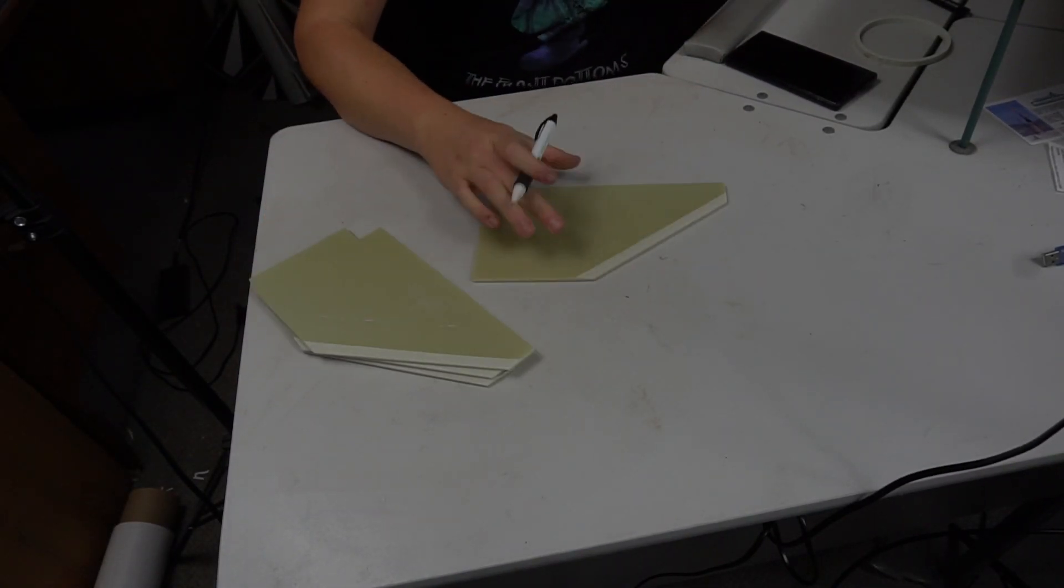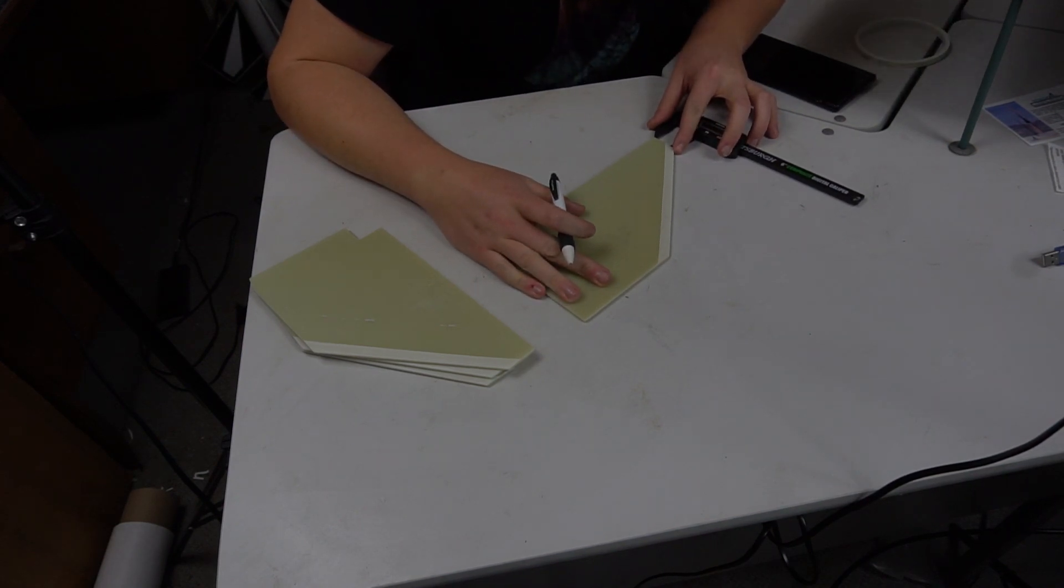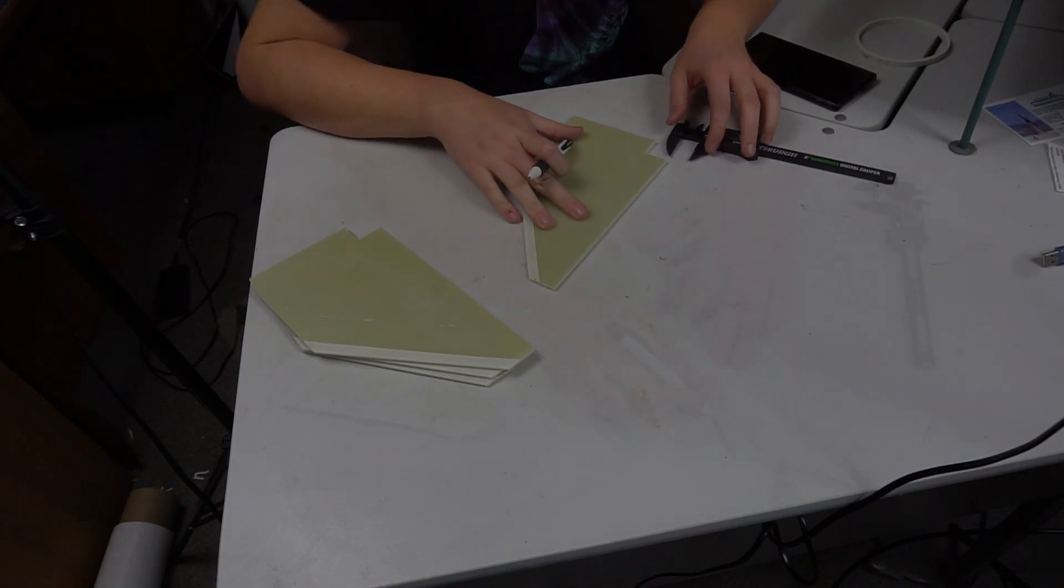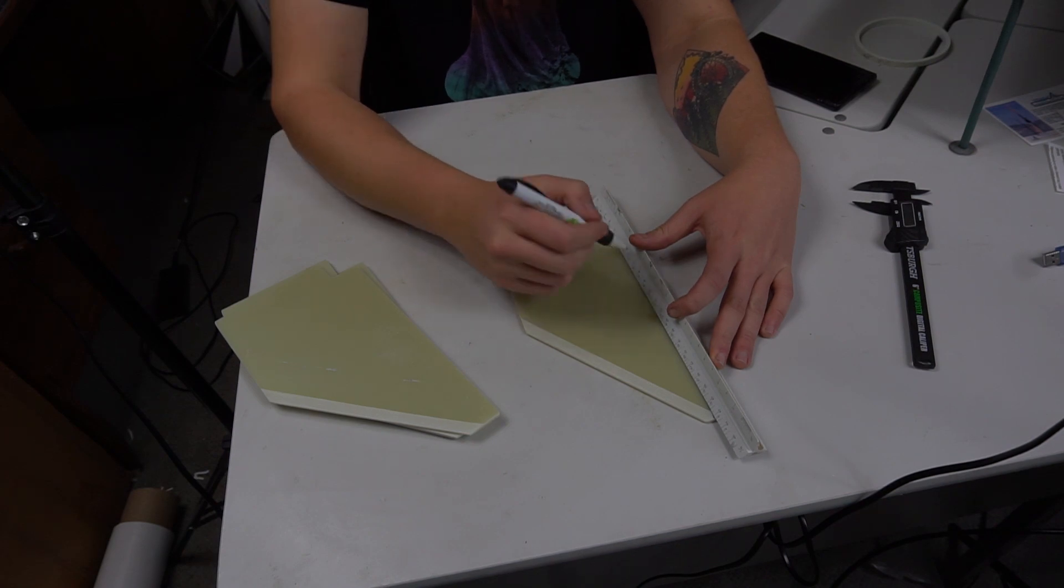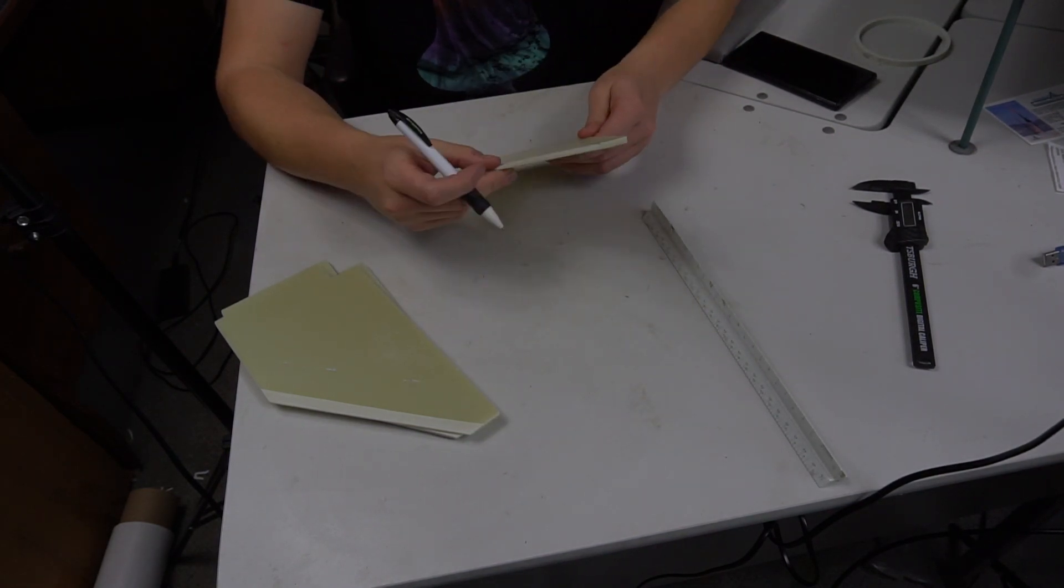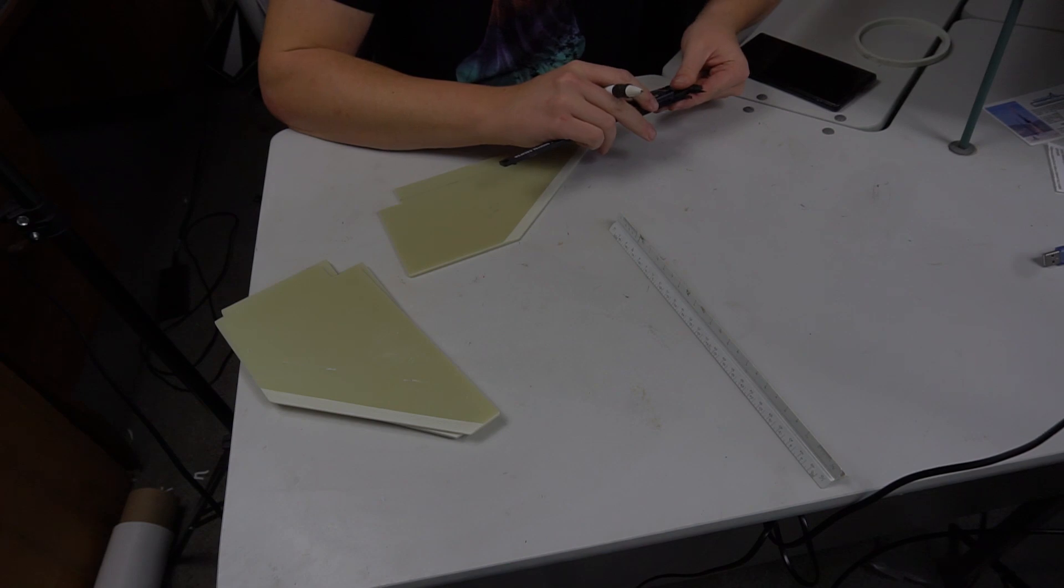Now we're going to use the digital caliper set at 0.85 inches to mark each end of the fin 0.85 inches from the end of the current tab. We're doing it on both sides so that we can take a straight edge and line it up and draw a perfectly straight line to follow with whatever your cutting tool of choice is.